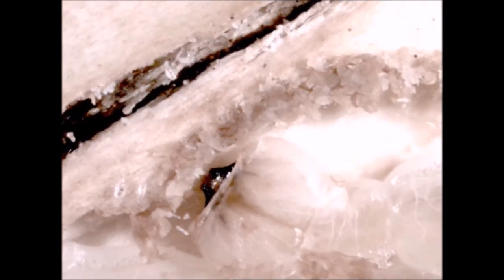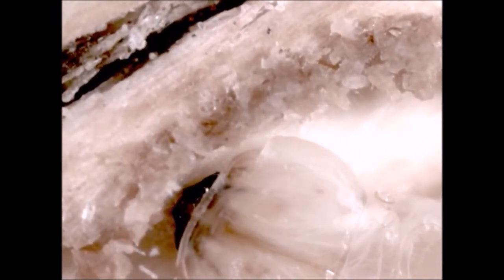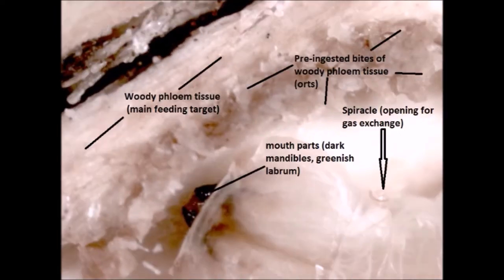You can see the other mouth parts such as the labrum — the upper lip — and all of the feeding organs. This still shows where the woody phloem tissue is that the insect targets, plus the orts or morsels that it has bitten from that woody phloem material.